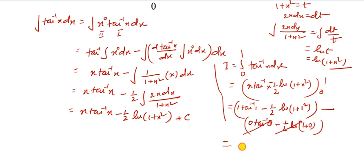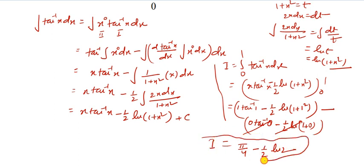So the result is pi by 4, because tan inverse 1 is pi by 4, minus one-half of ln 2. This is the value of I — the definite integral value of the integral from 0 to 1 of tan inverse x dx equals pi/4 minus half·ln 2.